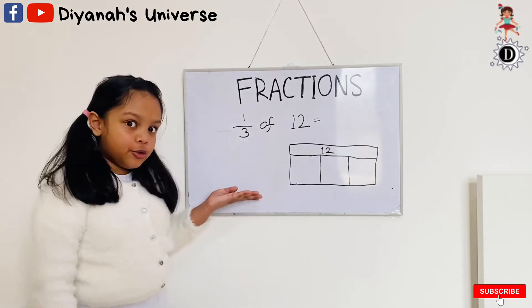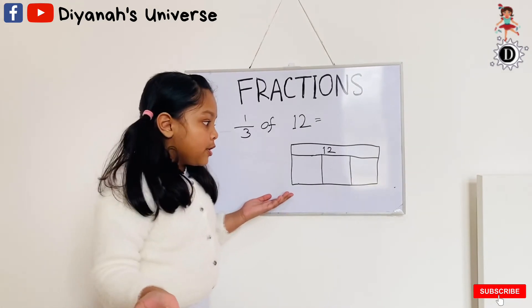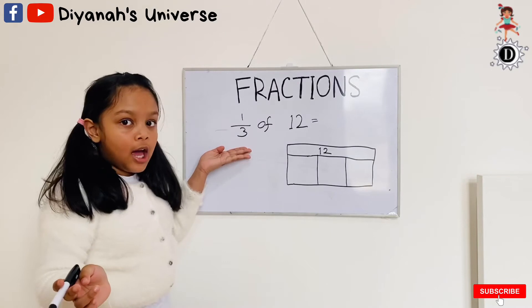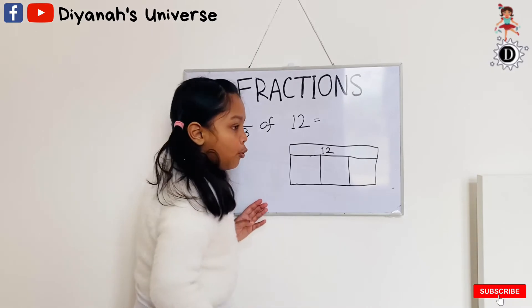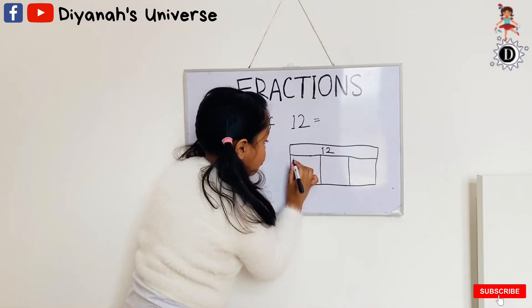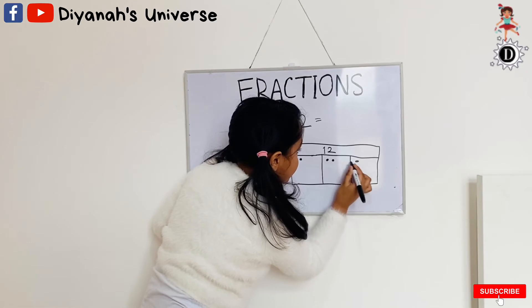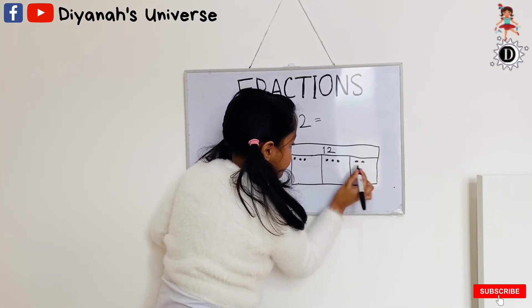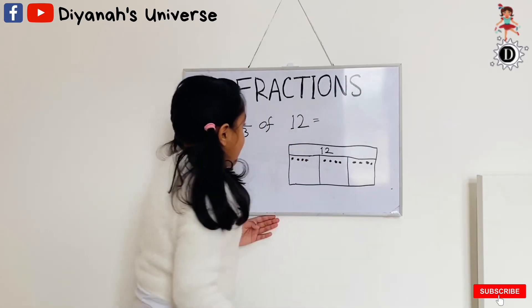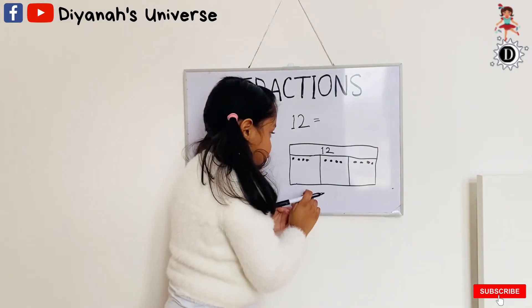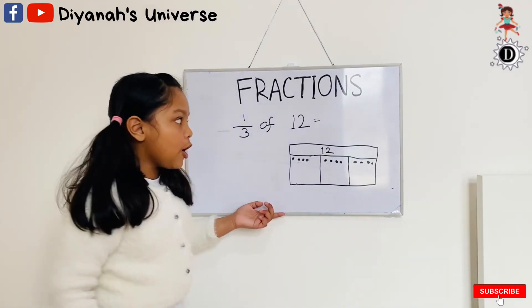I've got another example here to do: one third of 12. Just do the same thing as the last one, but it's a bit different because this time it's one third. So we share out the dots: one through twelve — and now the top number tells us how many dots I need to count. So I need to count this box: one, two, three, four. The answer is four.